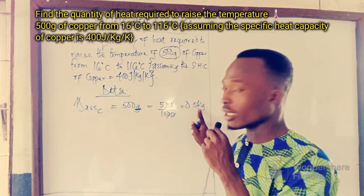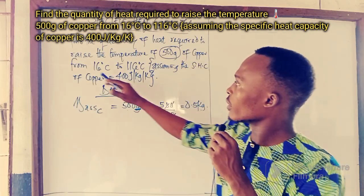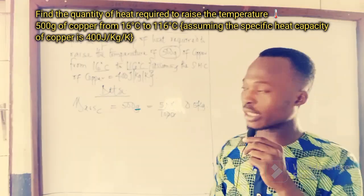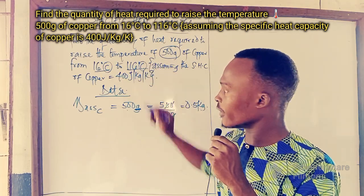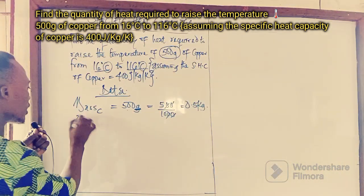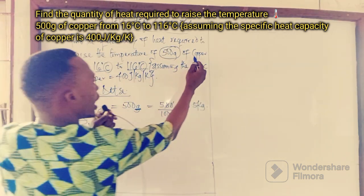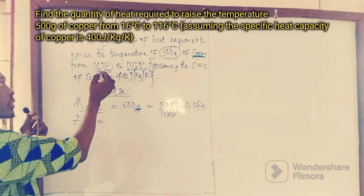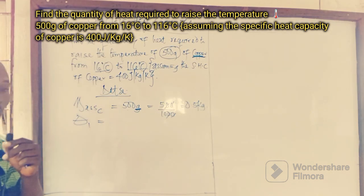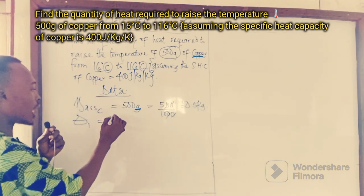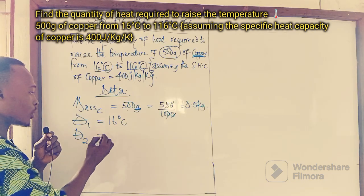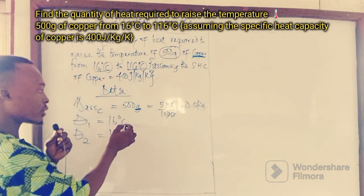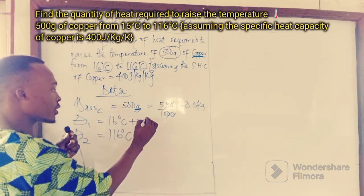So we're given 0.5 kilograms indirectly from the mass of 500 grams. We're also given the temperature of copper from 16 degrees Celsius to 116 degrees Celsius. The standard unit of temperature is Kelvin, so we need to convert Celsius to Kelvin. We write theta 1 as 16 degrees Celsius and theta 2, the final temperature after heating, as 116 degrees Celsius. To convert, we add 273 to each value.